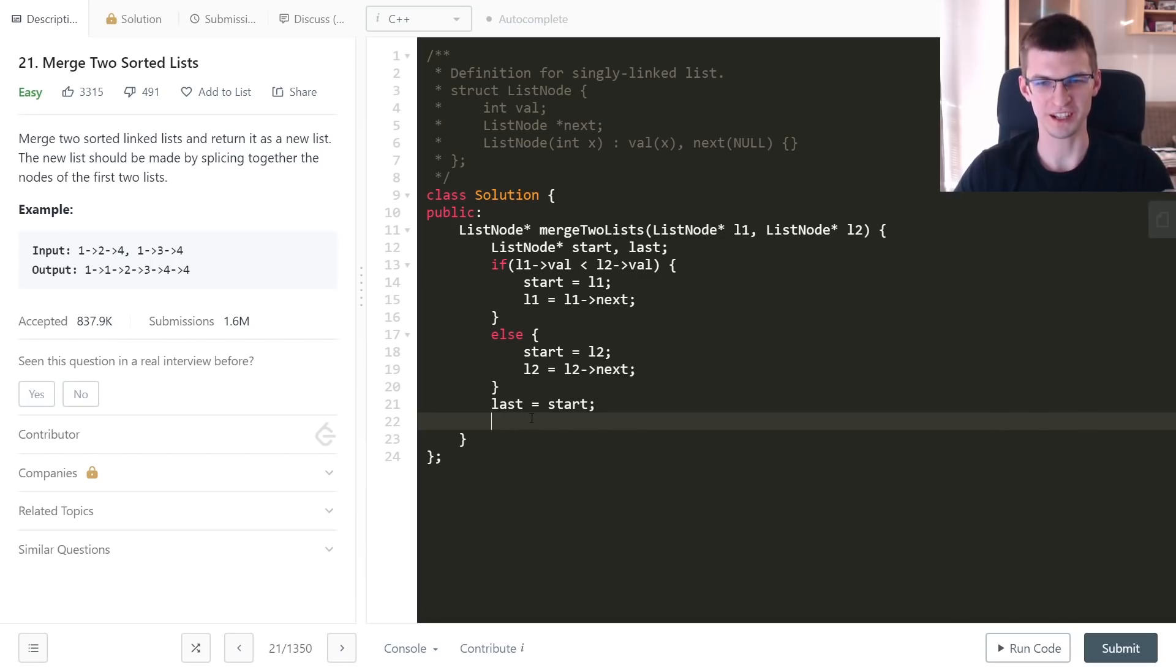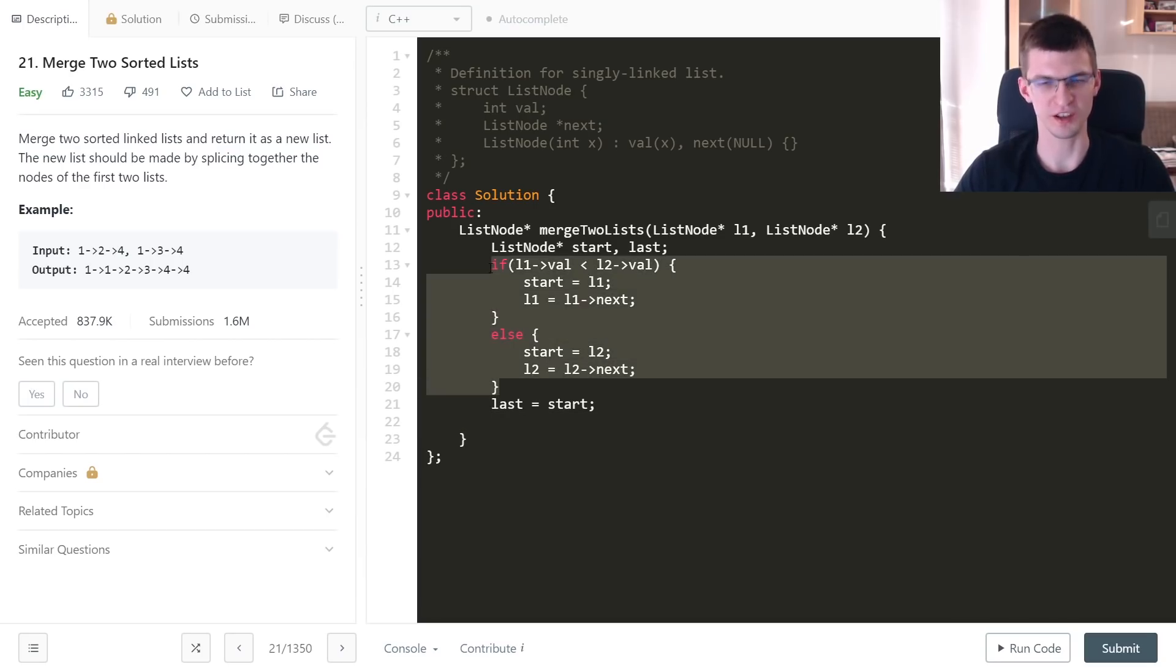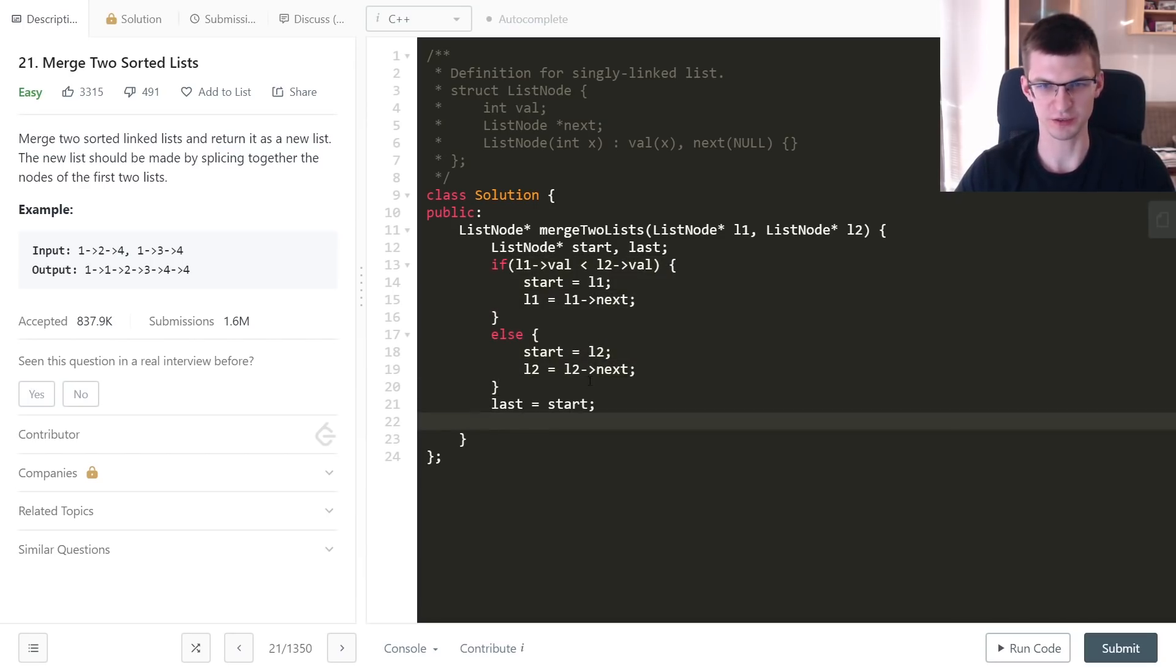Even before the main algorithm our implementation is already several lines. You can make a mistake here and actually this is not correct, because L1 or L2 can represent empty lists. Then it will be null and here we have runtime error. You cannot check val of something that is a null pointer.